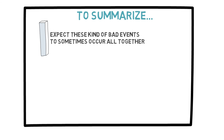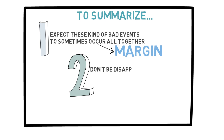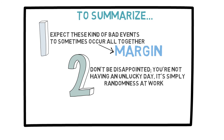To summarize, there are two lessons here. First, we should expect these kinds of bad events to sometimes occur altogether, so we should not be surprised when they happen, but we should allow enough of a margin to handle them. Secondly, we shouldn't be disappointed when these things happen — don't think that you are having an unlucky day. By a matter of randomness, these things simply happen. Of course, these examples are fairly simple, but we will go into the probabilistic arguments in greater depth later in this course. Thank you for watching.